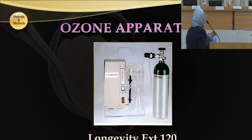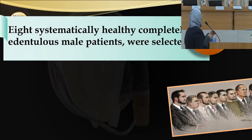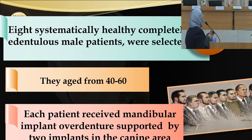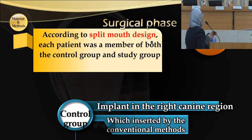The Longevity Exit 120 ozone generator was used in this study. The study was done in two sections: a clinical study and an experimental study. In the clinical study, eight systemically healthy, completely edentulous male patients were selected, aged from 40 to 60 years. Each patient received a mandibular implant overdenture supported by two implants in the canine area. According to a split-mouth design, each patient was a member of both the control group and study group.